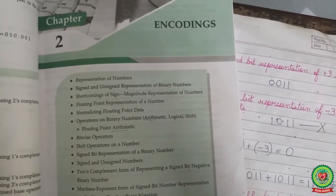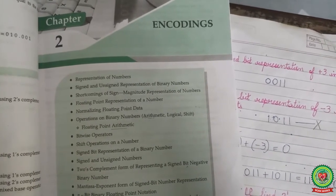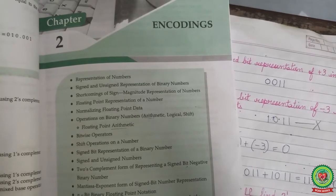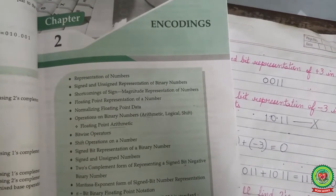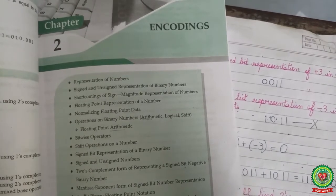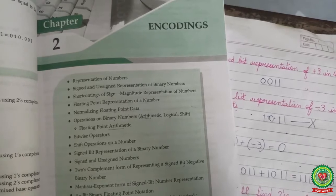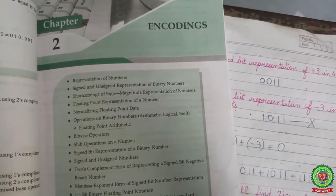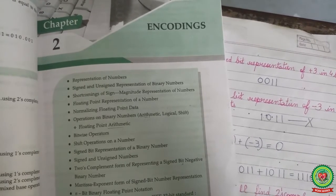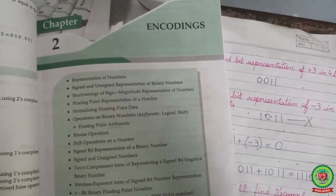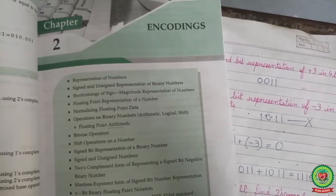Previously we had done representation of numbers, signed and unsigned representation of binary numbers, shortcomings of signed magnitude representation of numbers, floating point representation of number, normalizing floating point data, operations on binary numbers, bitwise operators, shift operations on a number, signed bit representation of a binary number, and signed and unsigned numbers.